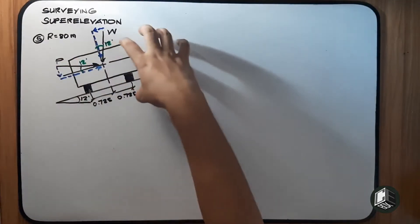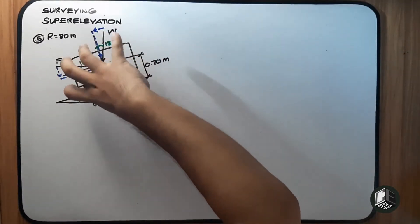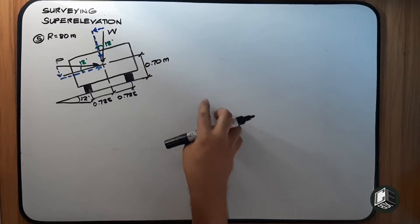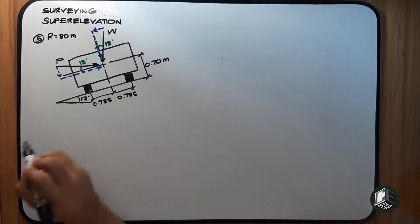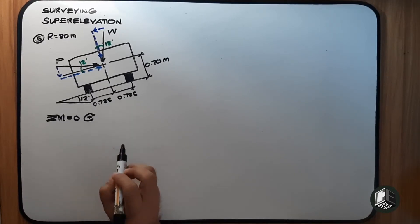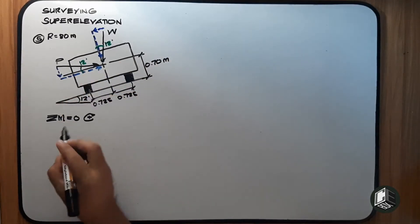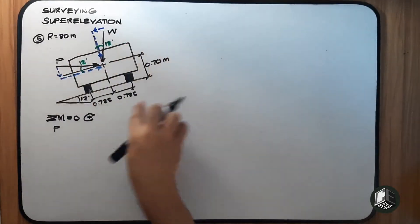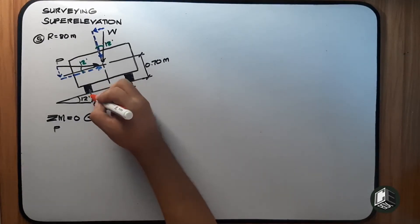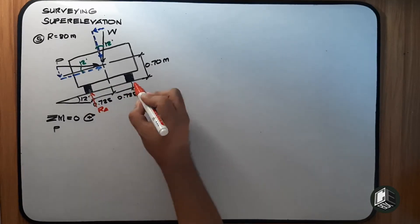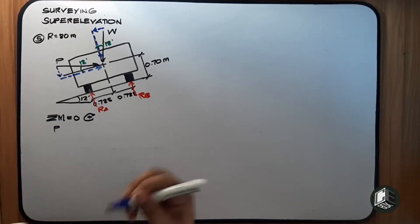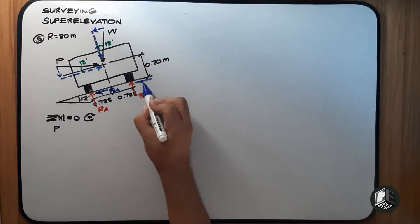We take moments about the outer edge point, since the car would overturn about that outer edge. The inner edge lifts. For the summation of moments to equal zero, with clockwise as positive, we note that there are reactions at both wheels — reaction A and reaction B — along with frictional forces Fa and Fb.